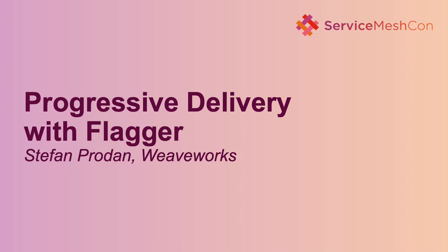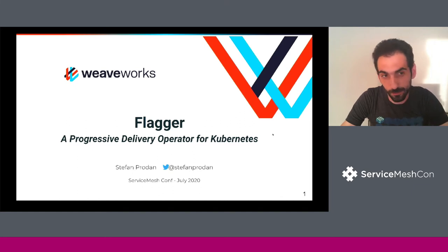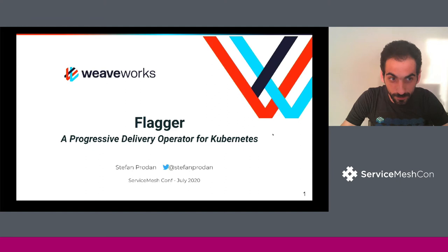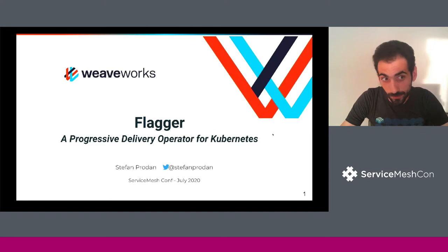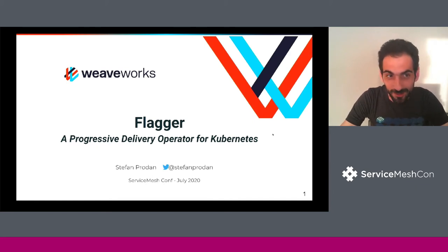Hello folks. I'm Stefan, and today I'm going to give you a quick overview of Flagger. Flagger is a progressive delivery operator for Kubernetes. We started this project at WeWork almost two years ago, as we needed a way to automate the release process of applications on production systems that are managed via Git. And this is what we ended up calling GitOps.